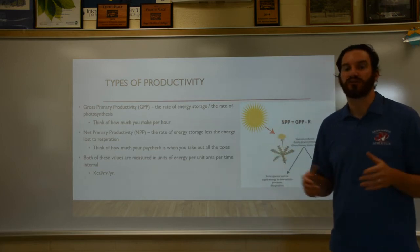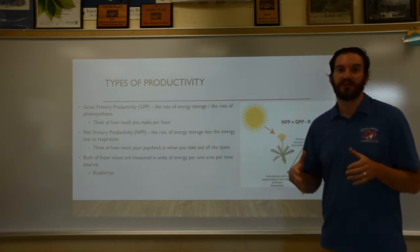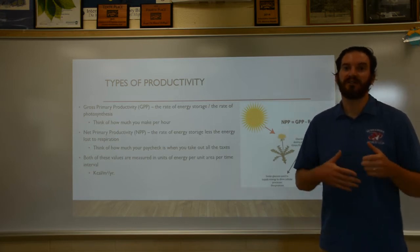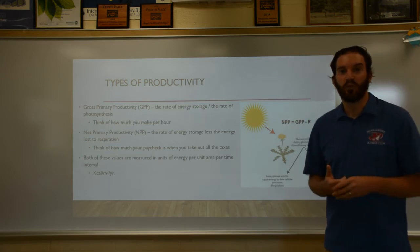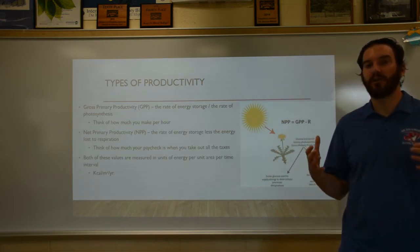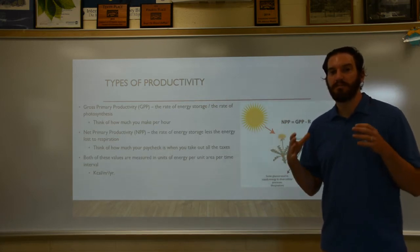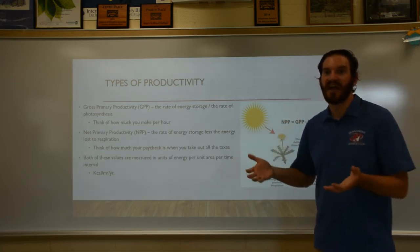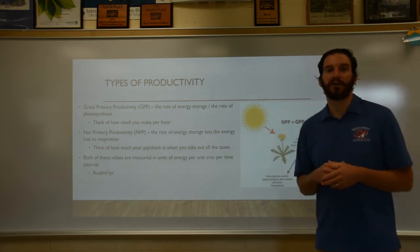NPP is Net Primary Productivity. To get from gross to net, we subtract out cellular respiration, because cellular respiration uses up energy for growth, basic metabolism, warmth, digestion, and other processes. So the energy actually converted into the organism's biomass is GPP minus the amount used in cellular respiration, giving us NPP — net primary productivity — how much energy is really available per year.